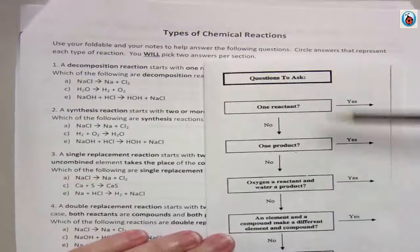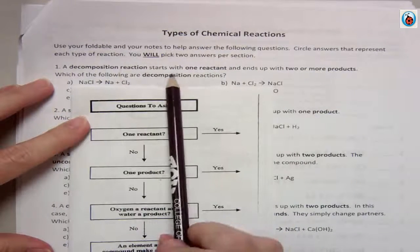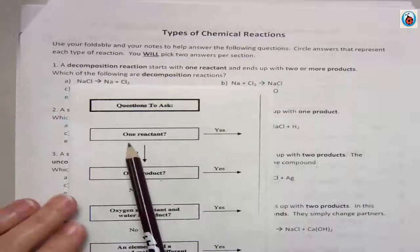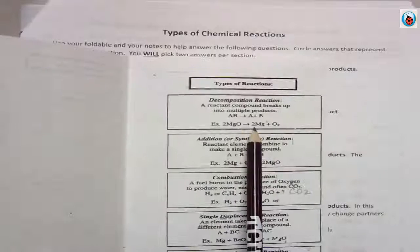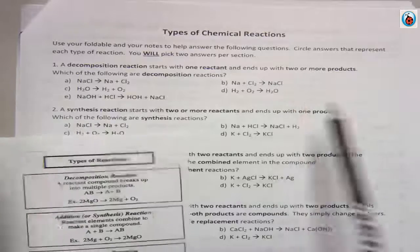Alright, go through and ask these questions when you look at each one because the first one says a decomposition reaction starts with one reactant and ends up with two or more products. So remember, one reactant, two or more products. So we are looking for reactions that look like this. And then we're going to circle two answers.